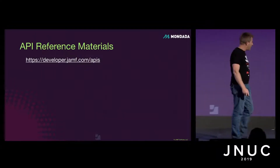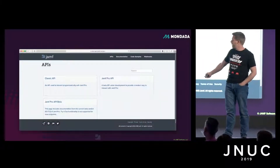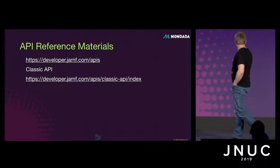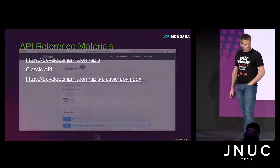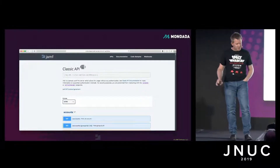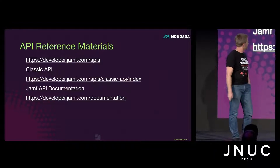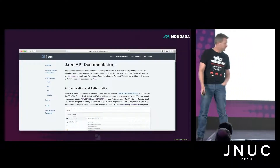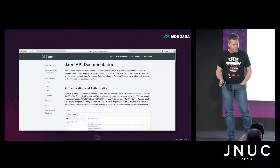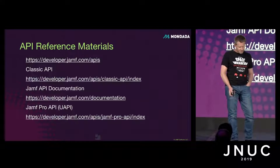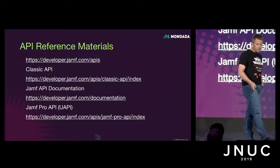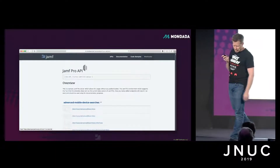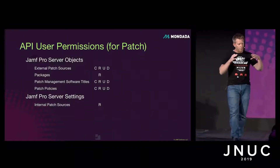There's documentation on the developer docs at the APIs. Start with the developer docs, there are a couple of holes I'll attempt to fill today. There are the classic API docs which detail everything, also visible within your Jamf Pro instance. There's also the Jamf Pro API — commonly called the UAPI — which is the newer JSON-based API with specific documentation. I'll walk you through the user permissions — is anyone familiar with CRUD? Create, read, update, delete — that's what most APIs do.